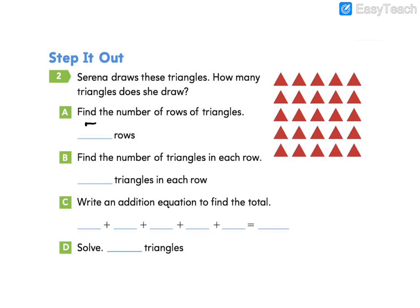You should have found that there were 5 rows. For letter B, we're going to find the number of triangles in each row. Count how many triangles are in each row. There are 5 triangles in each row, so we know that we have 5 rows of 5 triangles.